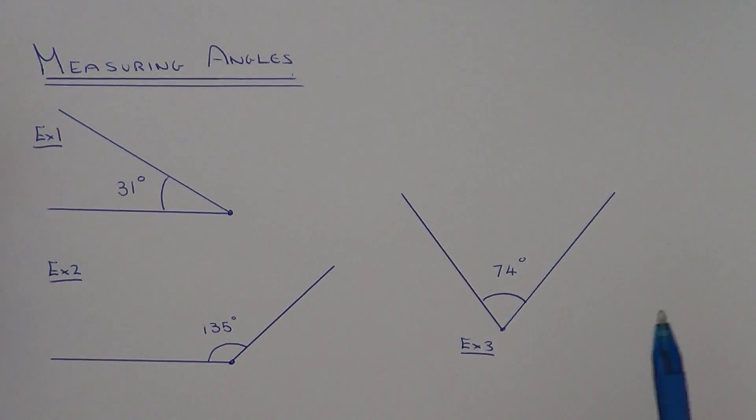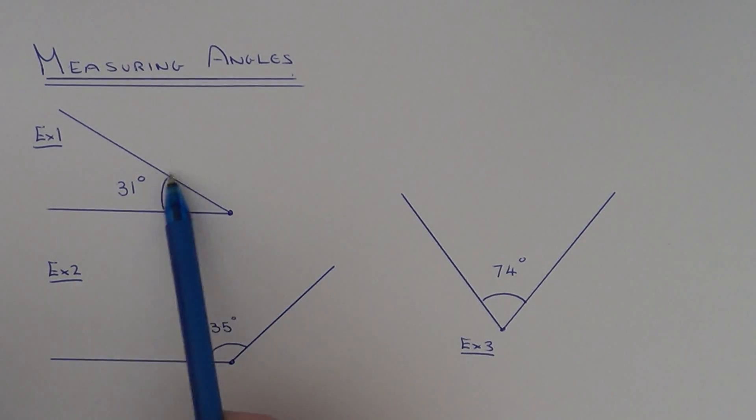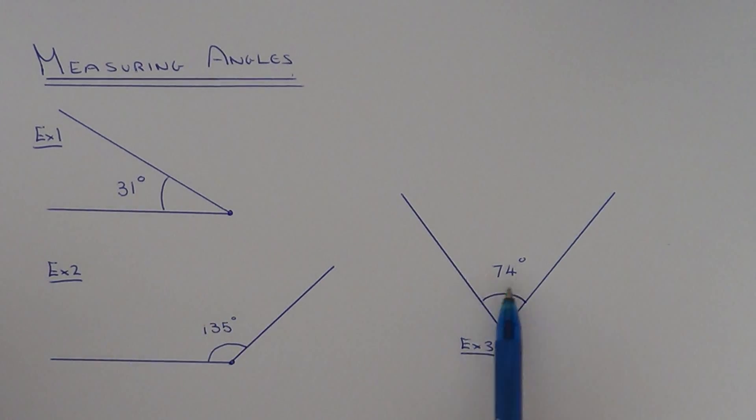You should be able to check your angles to see if they're correct because you should be able to see if they're acute or obtuse. You can see this one's clearly an acute angle, hence we've got 31 degrees. This one's obtuse, it's more than 90 degrees, this looks about right. And the final one is an acute angle, so you can see 74 degrees looks about right.